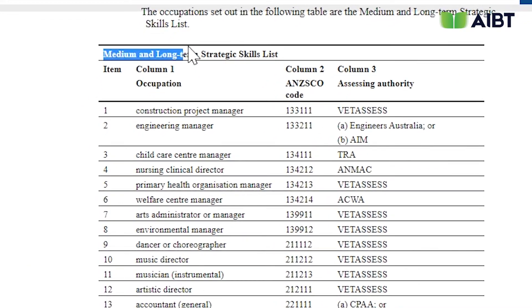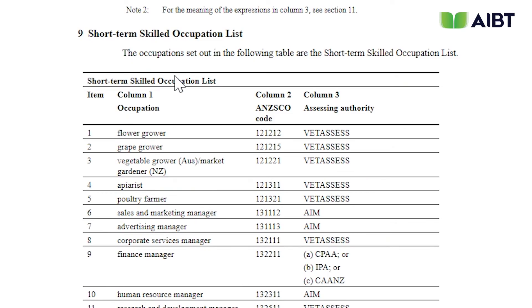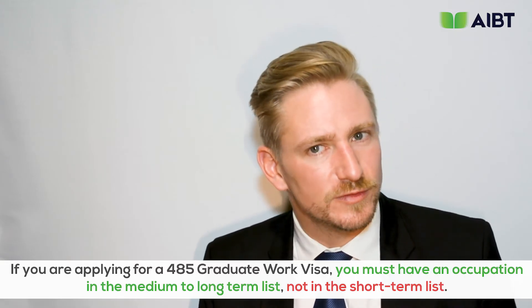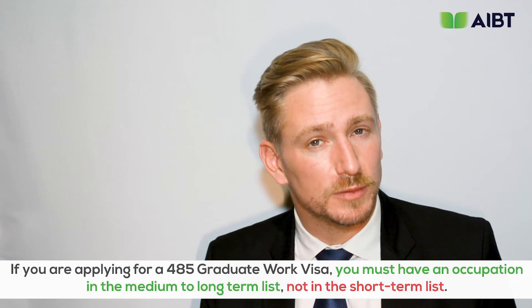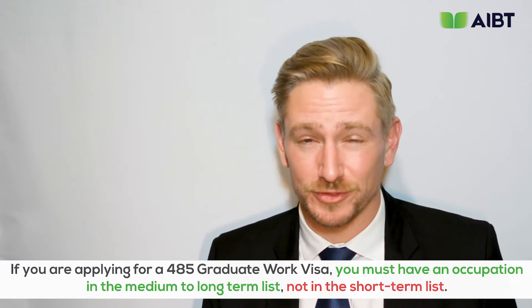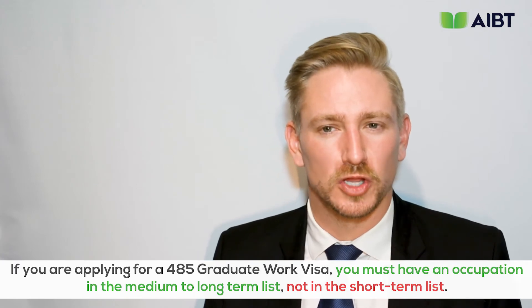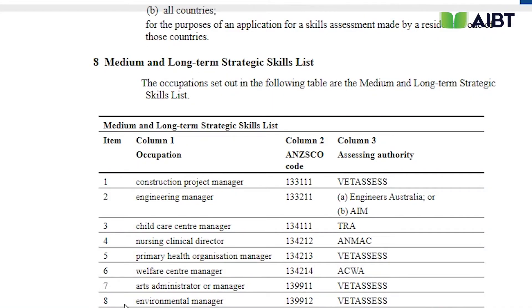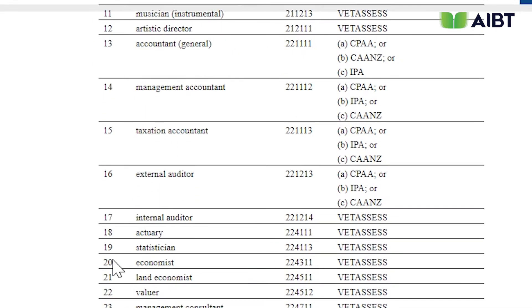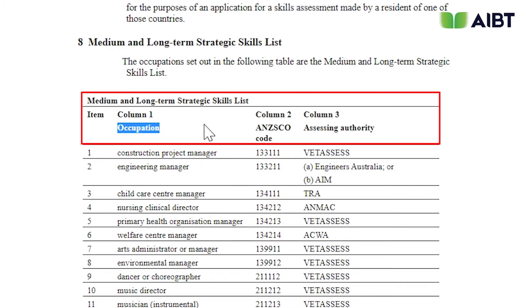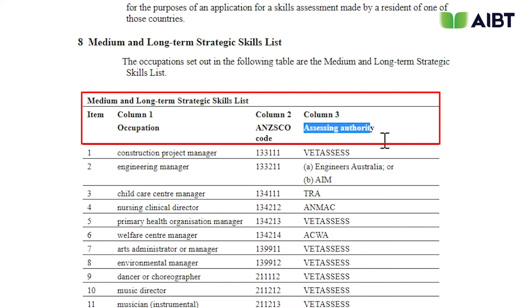If you are applying for a 485 graduate visa, you must have an occupation on the medium and long-term list, not the short-term list. Occupations are noted on the left, followed by the ANZSCO code, and finally the assessing authority. Depending on the occupation selected, there will be a corresponding evaluating or assessing authority that will ensure you meet the requirements of the course. This is a validation of the skills, knowledge, and placement.